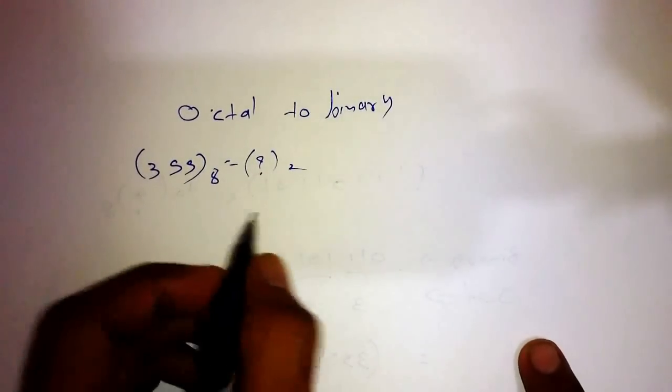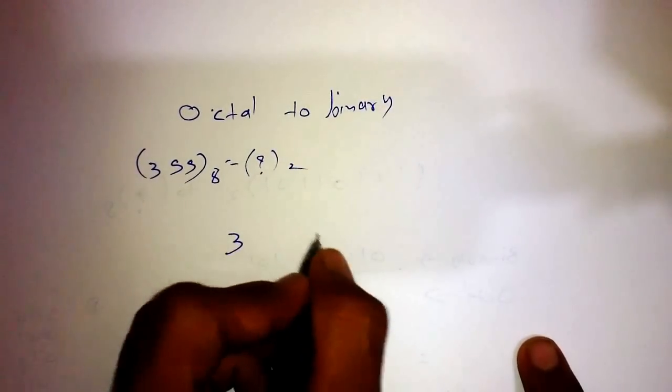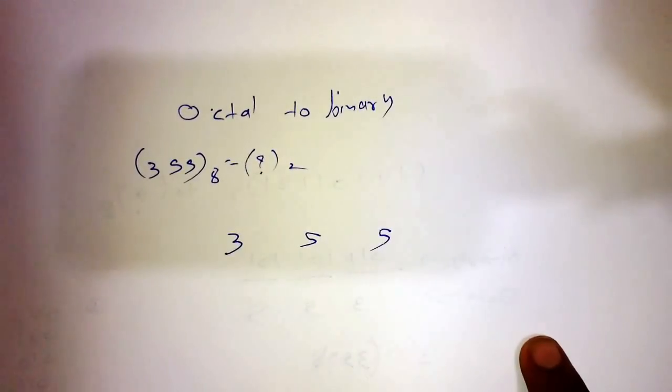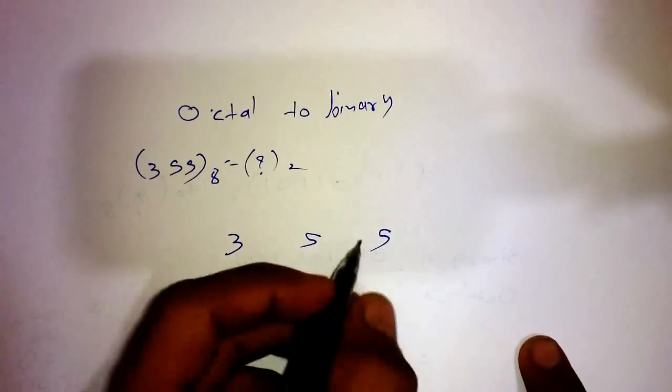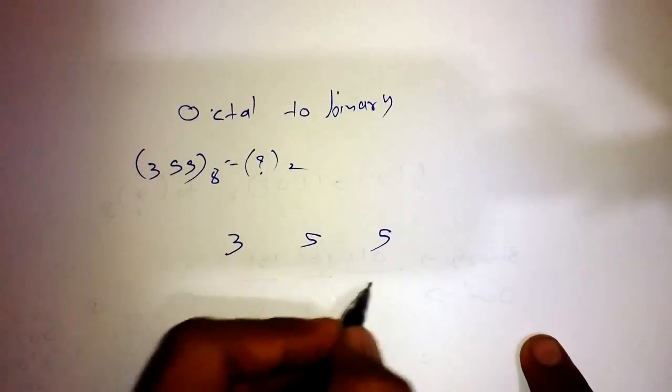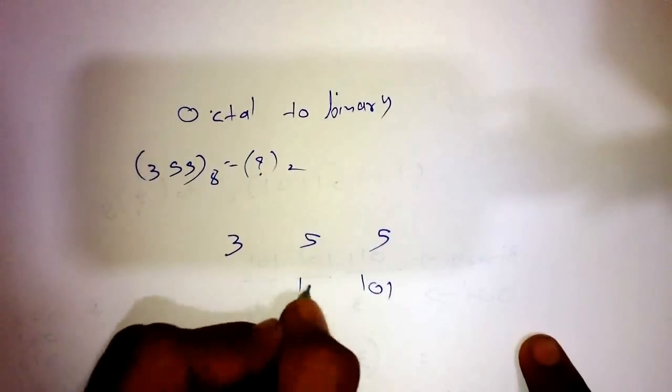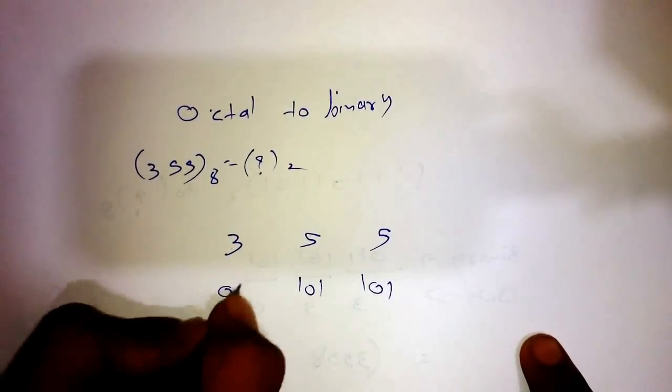Write this number with some space: 3, 5, 5. Now write the equivalent 3-bit binary number for each digit: 011, 101, 101.